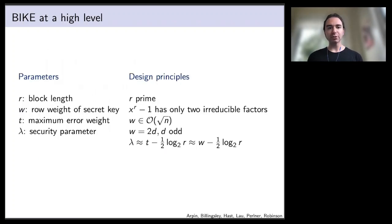The parameters for BIKE: we have the block length r, and there's a few extra conditions needed on that to avoid certain known attacks. It has to be prime, and x to the r minus one has to only have the two obvious irreducible factors over the field with two elements. We have the row weight of the parity check matrix, the secret key, which should be on the order of square root of n. We have the maximum error weight. The security parameter lambda is computed in terms of these other parameters. At cryptographically relevant scales, this would be starting at 128 for lambda and going up from there for higher levels of security.